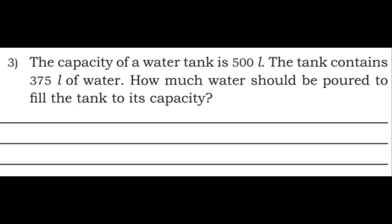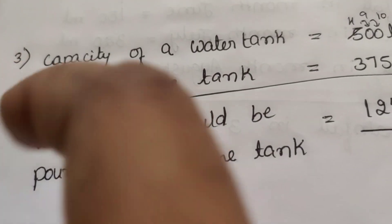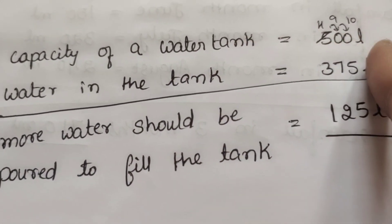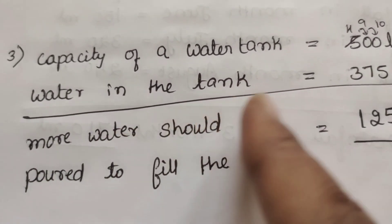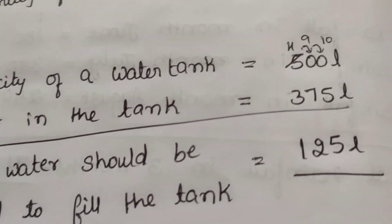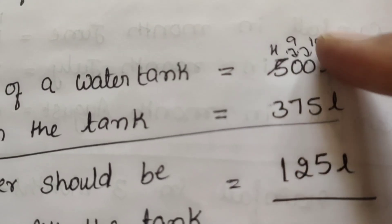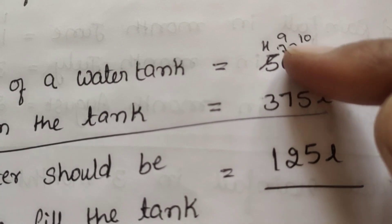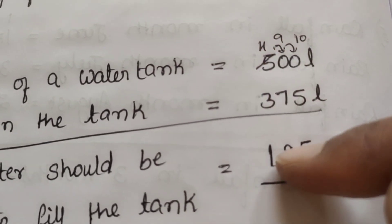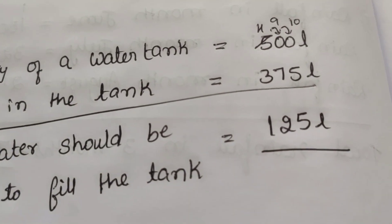Third question: The capacity of a water tank is 500 liter. The tank contains 375 liter of water. How much water should be poured to fill the tank to its capacity? Capacity of water tank is equal to 500 liter. Water in the tank is equal to 375 liter. Borrow 1, so 10 minus 5 is 5, 9 minus 7 is 2, 4 minus 3 is 1. Answer: 125 liter.